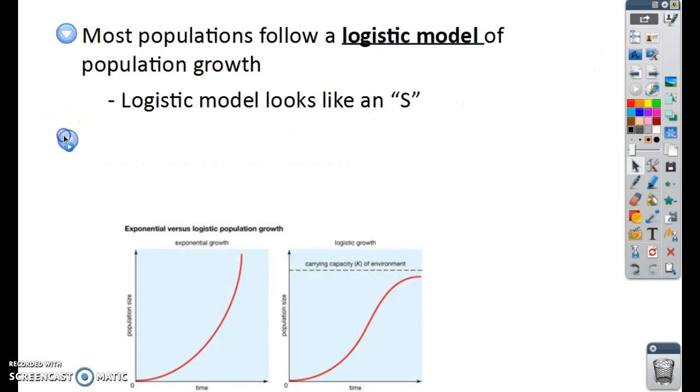Now, neither of these is how populations typically grow. They won't grow forever and ever and ever, like exponential or linear. Why? Well, because they have limits. There's only so much food and space and water. So most populations follow what we call a logistic model, and it looks like an S. So that's this guy down here. Notice, it looks like exponential, but then it levels off.